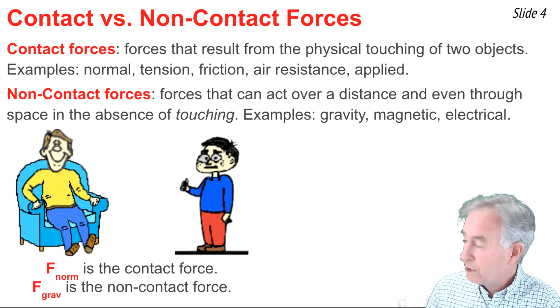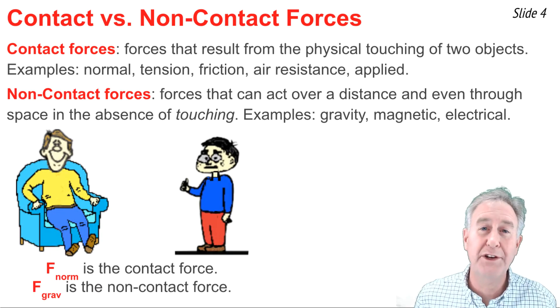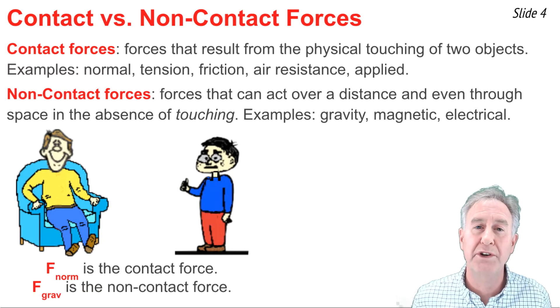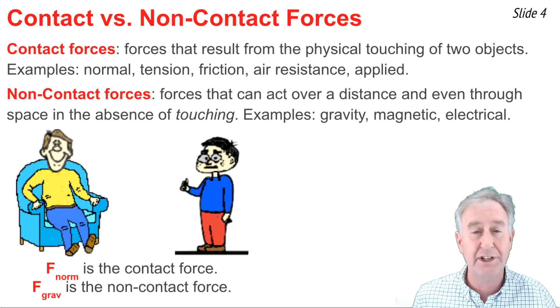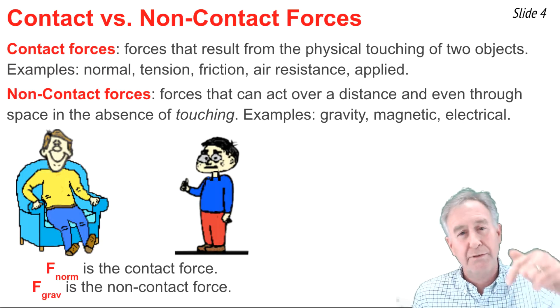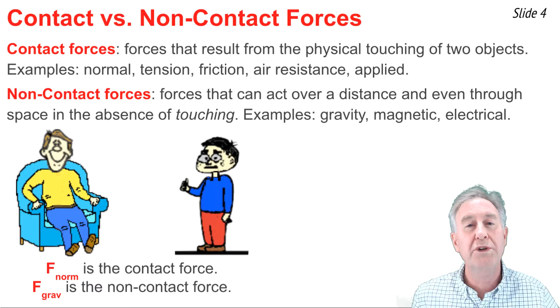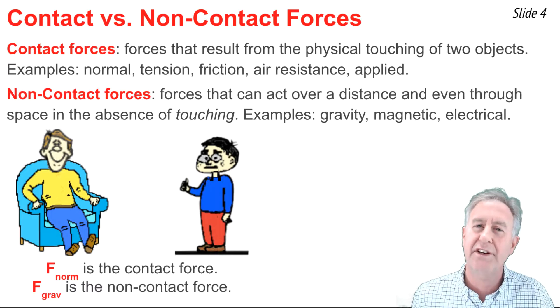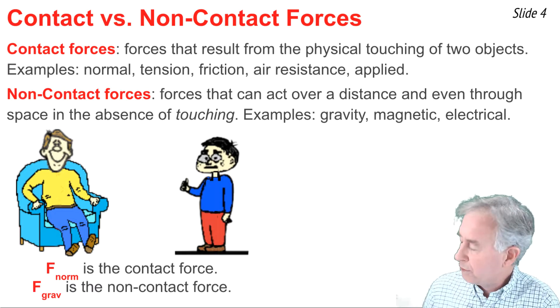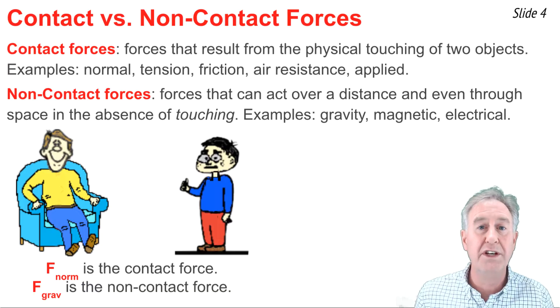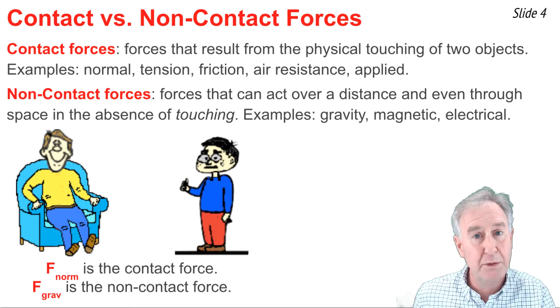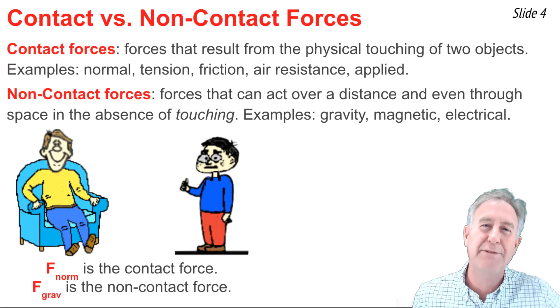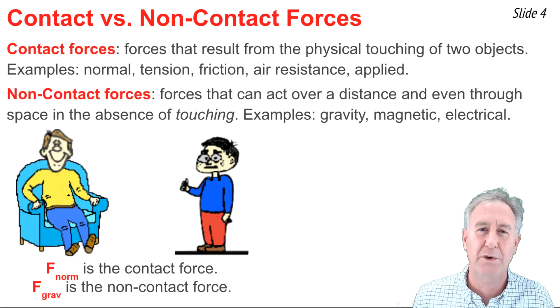Suppose a 600-Newton person is sitting in their chair. There are two forces on the person: there's the normal force, a contact force from the touching of the person and the chair, and there's the non-contact force, the force of gravity pulling down, which would exist even when the person is not touching the earth. If the person is standing on the floor, there's 600 Newtons of up force, a contact force from contact between the feet and the floor, and 600 Newtons of gravity force down, a non-contact force.